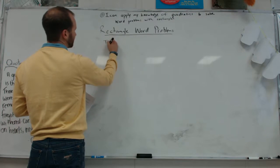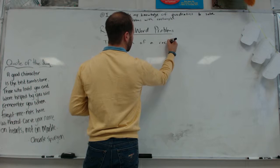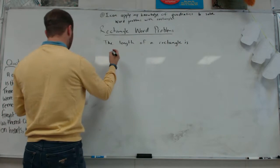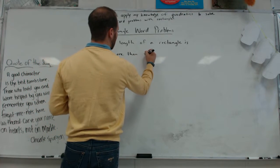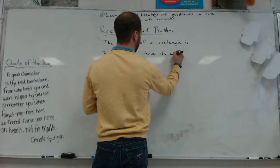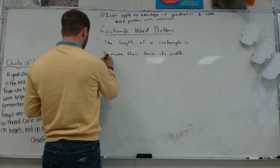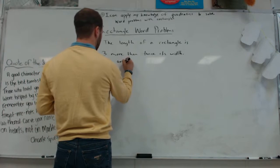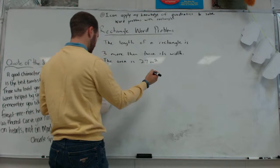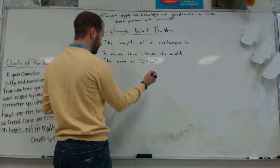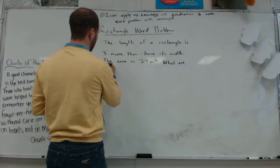The length of a rectangle is three more than twice its width. The area is 27 meters squared. What are the dimensions?